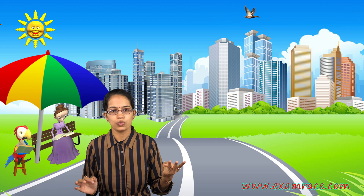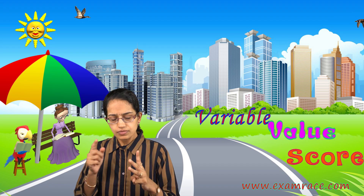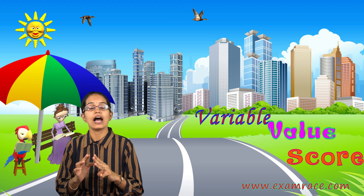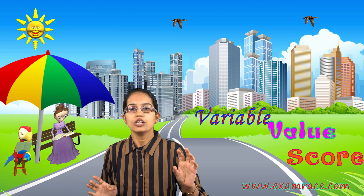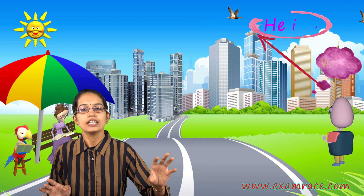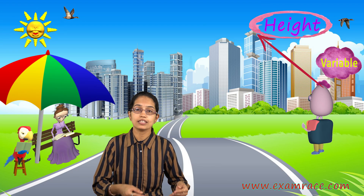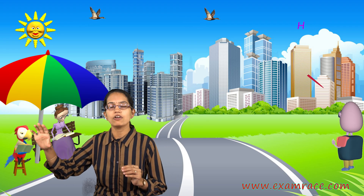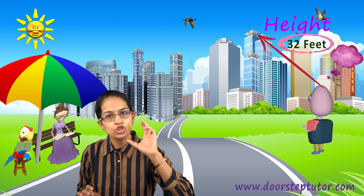So three things to note here: variable, value and score. A variable is a characteristic which tends to vary and can have many different values assigned to it — here the variable is height. You can have many values assigned to it, in this case from 6 to 60. Those 6 to 60 are the values, and the height of an individual building is the score.